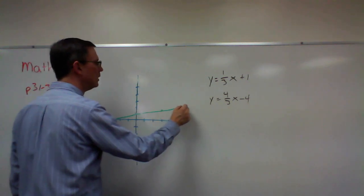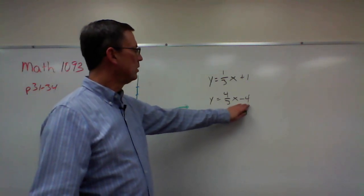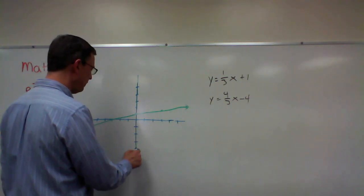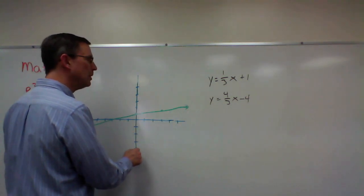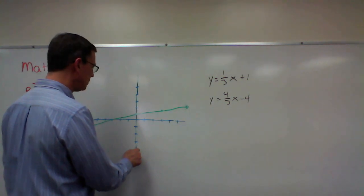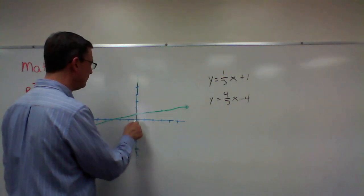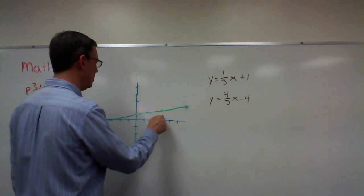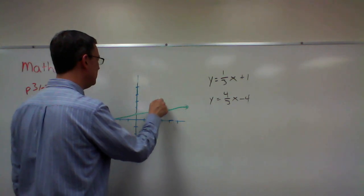This line goes through negative four and it has a slope of up four over three. So up one, two, three, four over one, two, three. And then it goes up one, two, three, four over one, two, three.